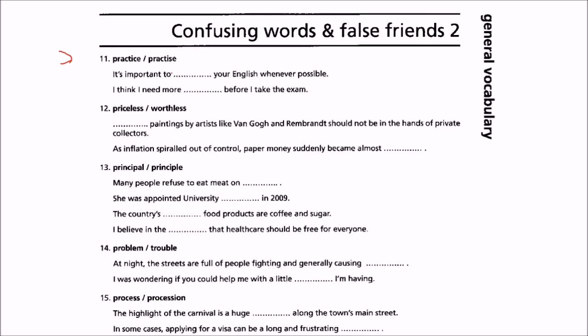Practice — as a noun and a verb. It's important to practice your English whenever possible. Then: I think I need more practice before I take the exam. When someone is doing it themselves, they need practice. When giving advice, you say 'it's important to practice your English whenever possible'.